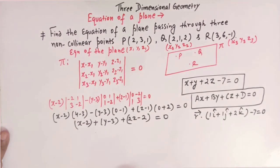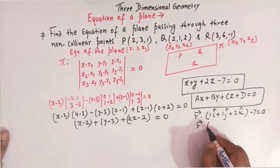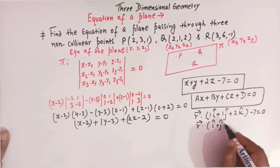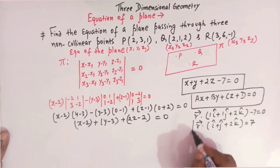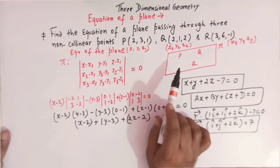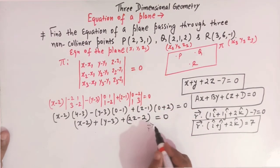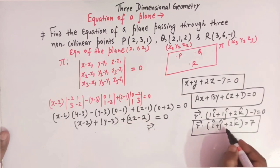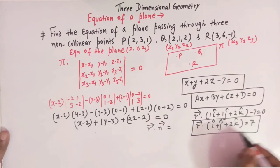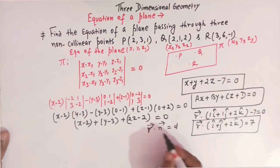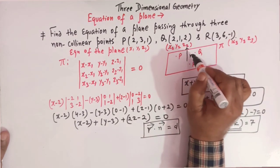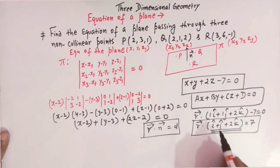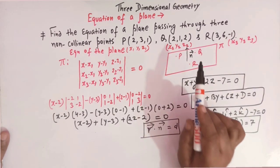In vector form, the equation is r dot (i-cap + j-cap + 2k-cap) = 7. This can also be written as r dot n-vector = d, where the vector r is a general point on the plane, n-vector = i-cap + j-cap + 2k-cap is the normal vector to the plane pi, and d = 7. The direction ratios of the normal vector are 1, 1, and 2.